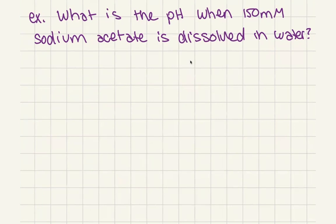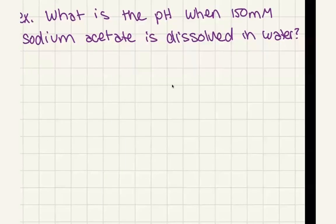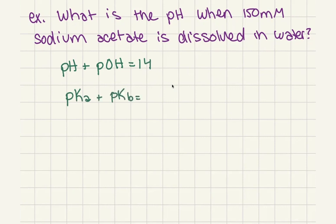In this case our base is sodium acetate. We need to use a couple of different relationships: one is that pH plus pOH equals 14, and the other is that pKa plus pKb equals 14.